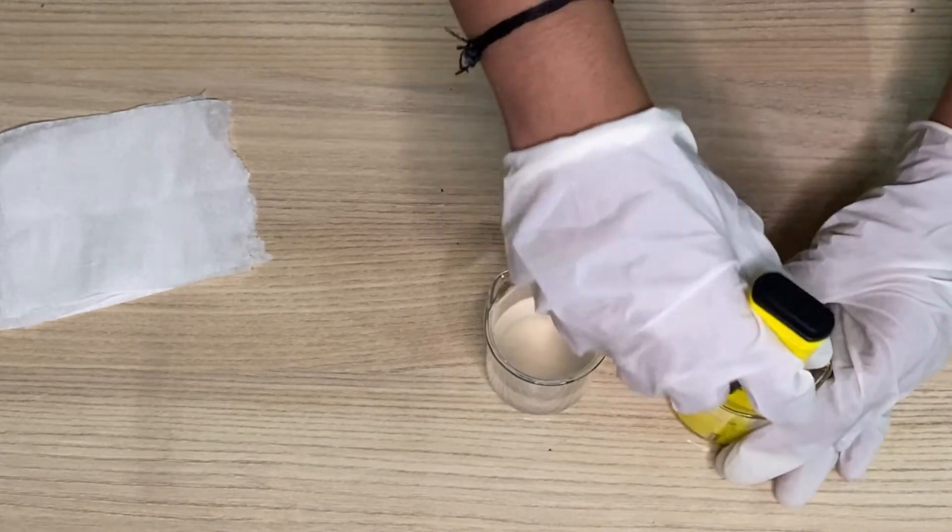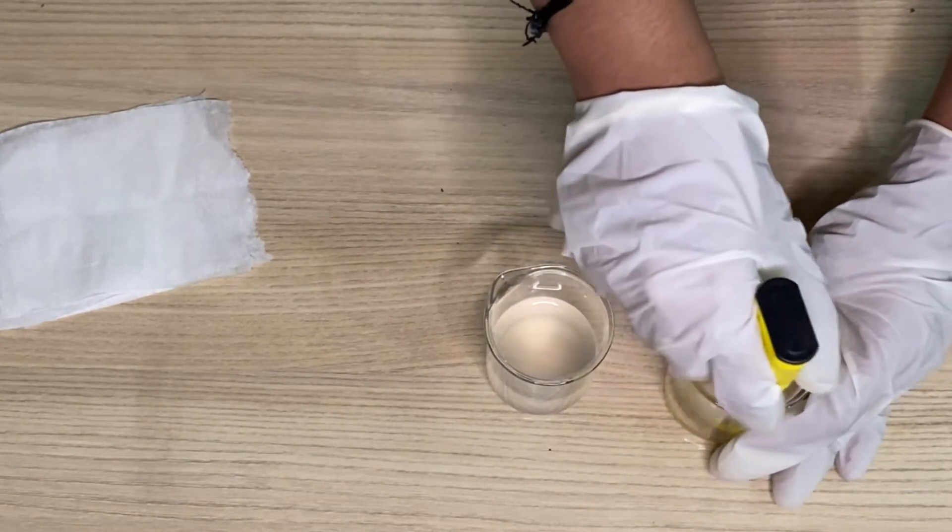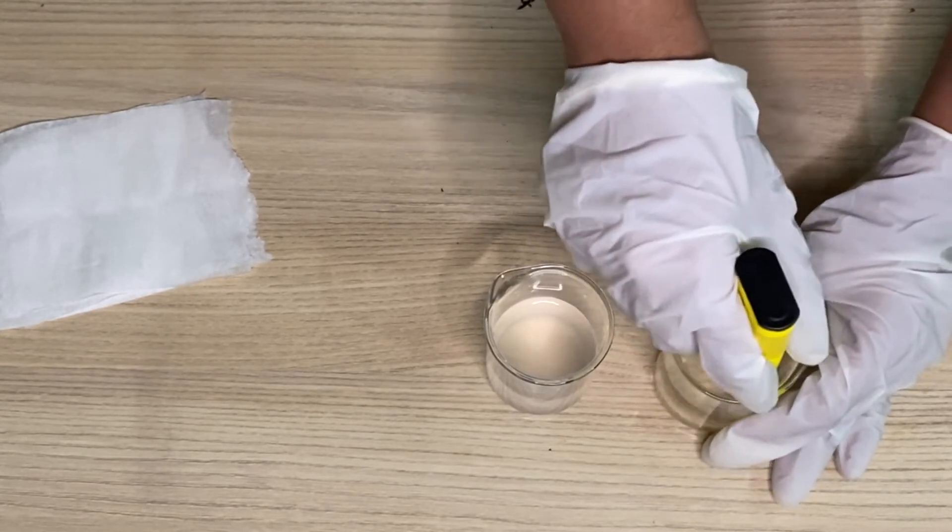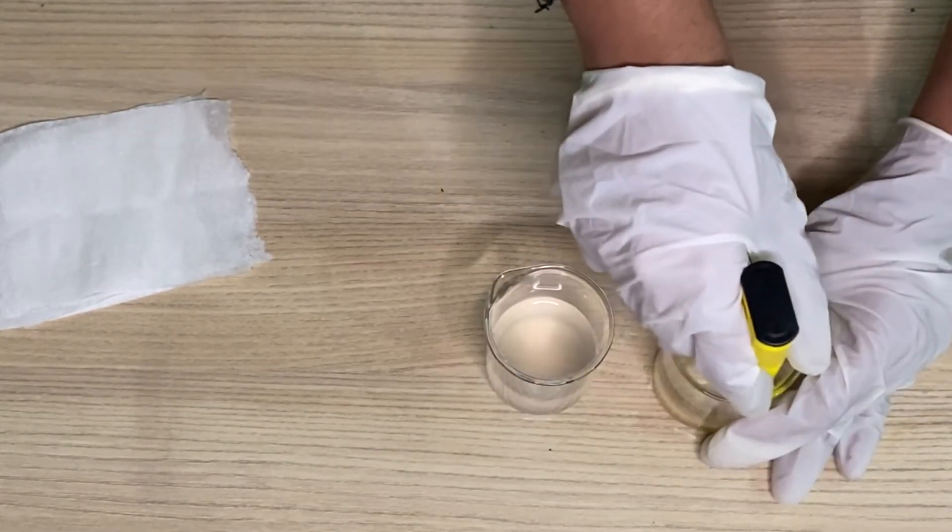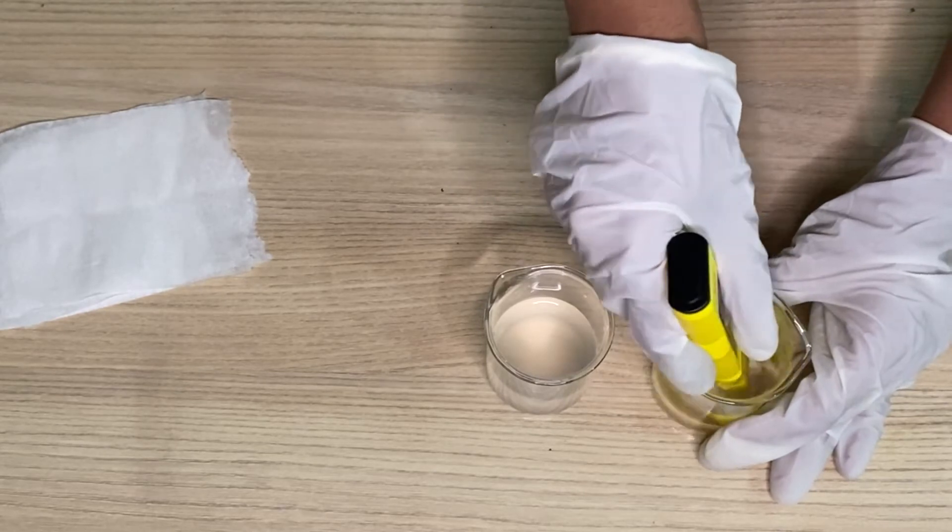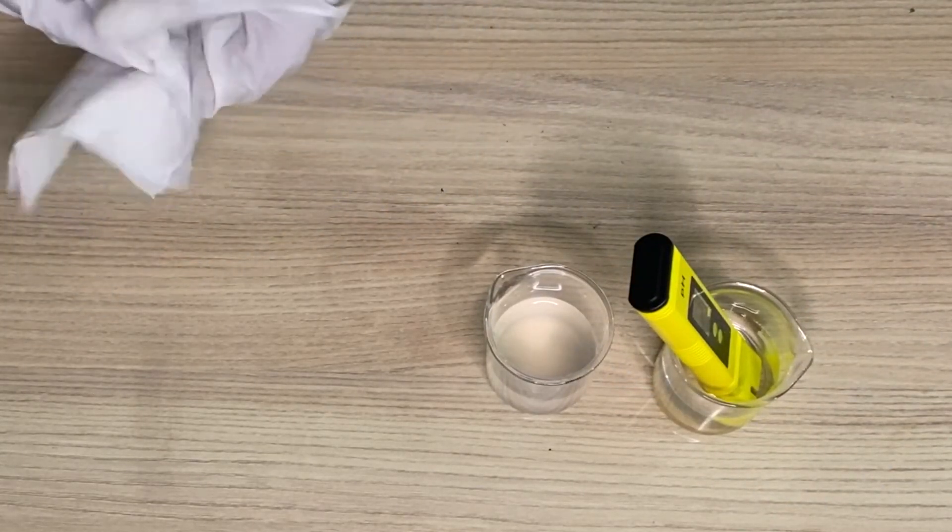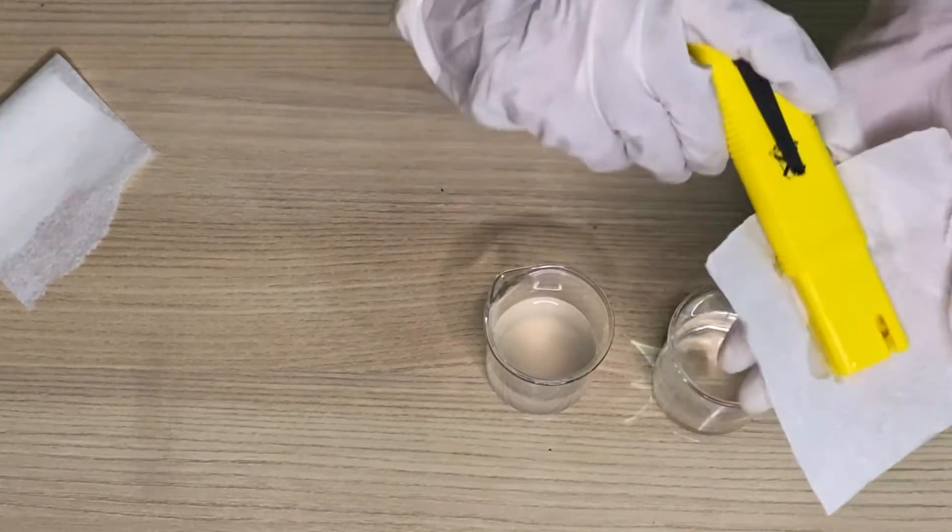Again put it in distilled water. Stir it gently. You don't want to break the glass inside the pH meter. And now again wipe it using a paper towel.